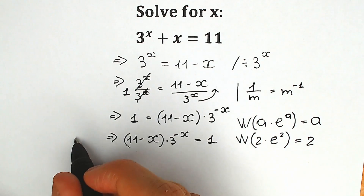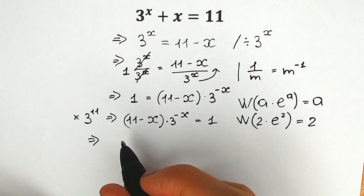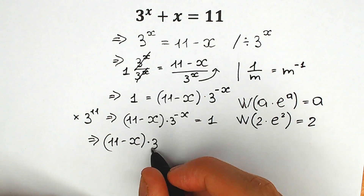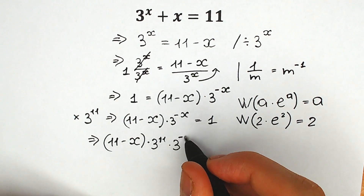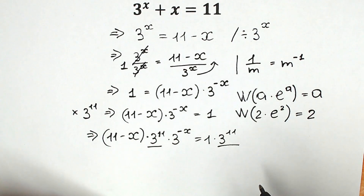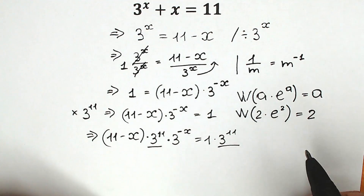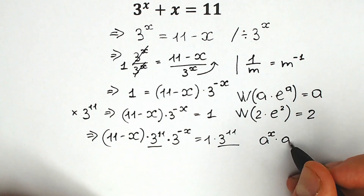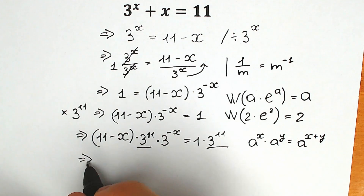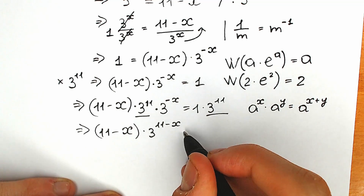First of all, let's multiply both sides by 3 to the power 11. When we multiply both sides by 3 to the power 11, we get (11 minus x) times 3 to the power 11 times 3 to the power minus x on the left, equal to 3 to the power 11 on the right. Looking at 3 to the power 11 times 3 to the power minus x — we have the same base with different powers being multiplied, so by the rule a^x times a^y equals a^(x+y), we can add the powers. As a result, we have (11 minus x) times 3 to the power (11 minus x) equal to 3 to the power 11.